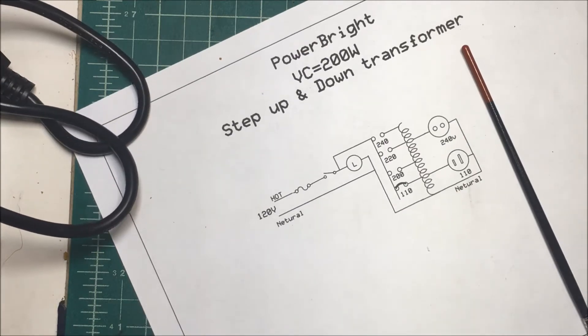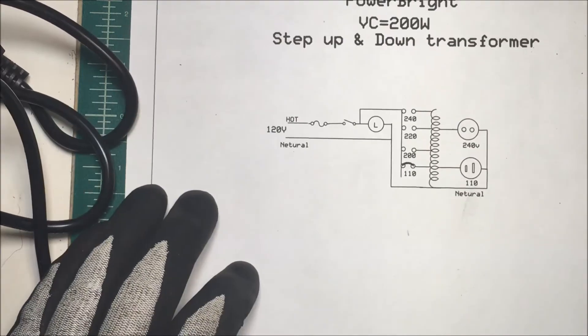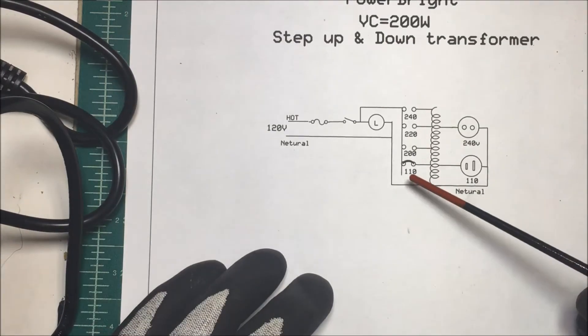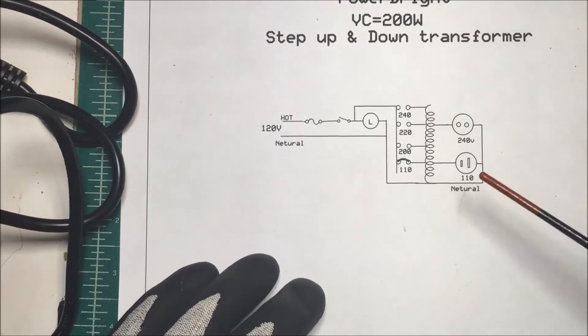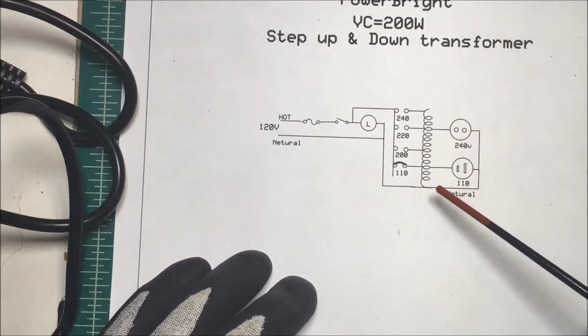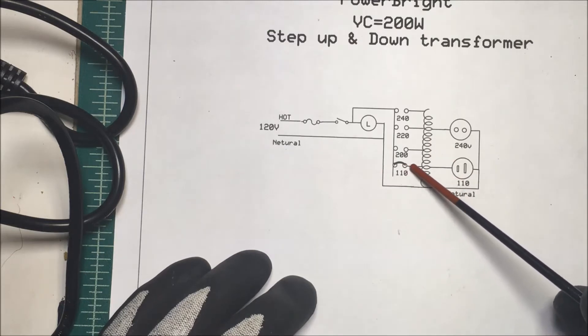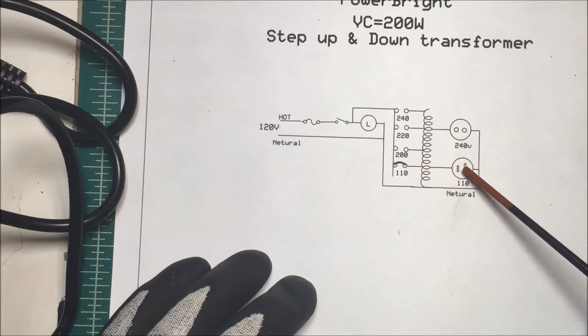There's a jumper right here and I have it hooked on 110, for me it's going to be 120. So this is our auto transformer here, this is a neutral down here and then we just have these tabs up here.